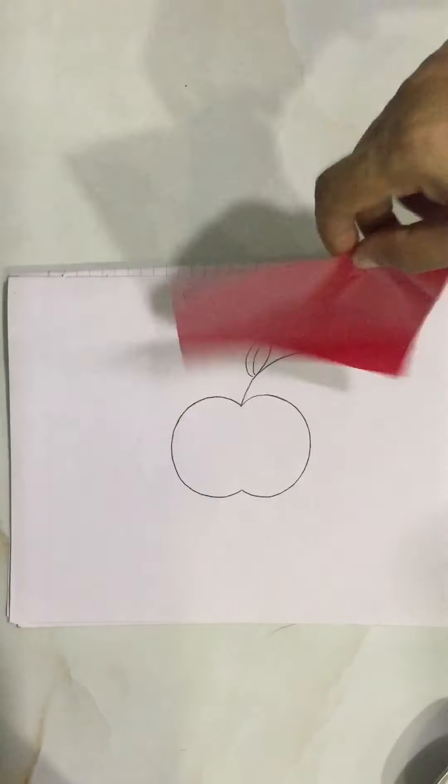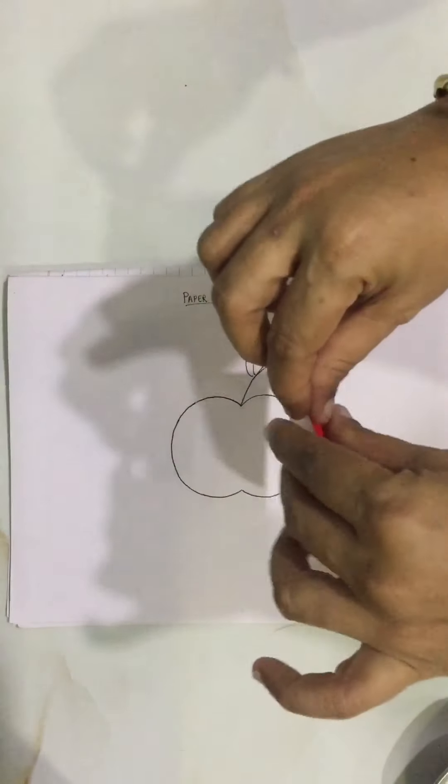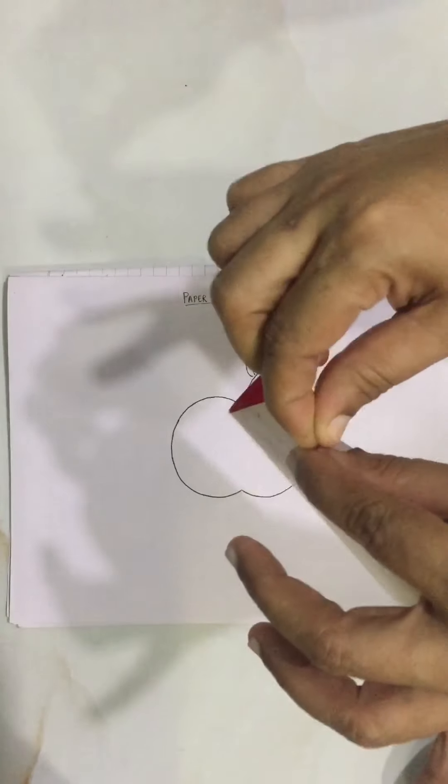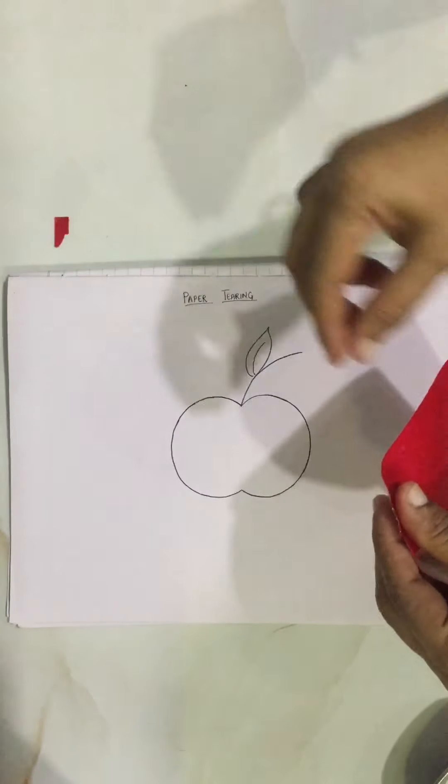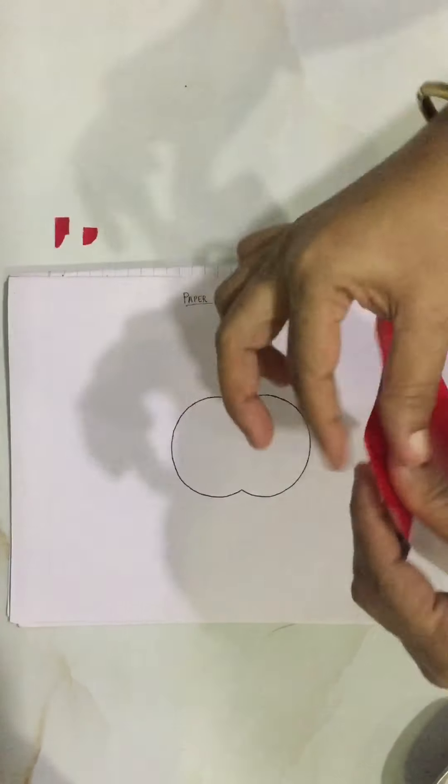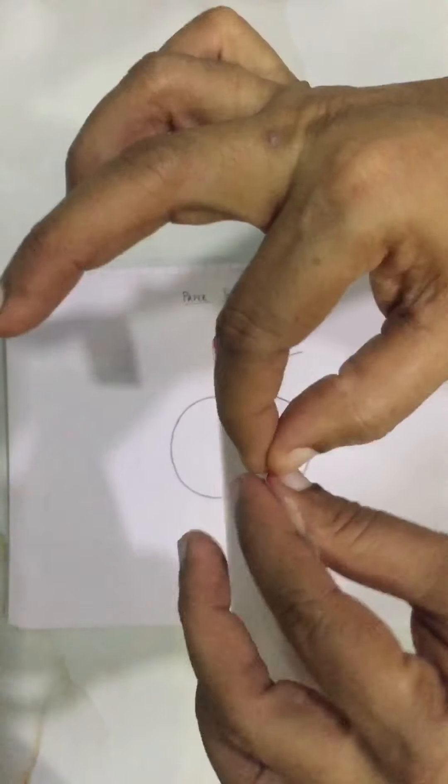So children, are we ready? Yes, take your marble paper. What are we going to do? We are going to tear small bits of paper and keep them down. Tear and keep it. No pulling, okay? You are supposed to tear.